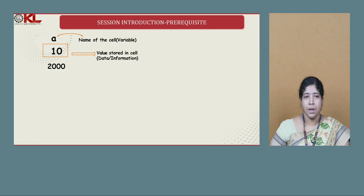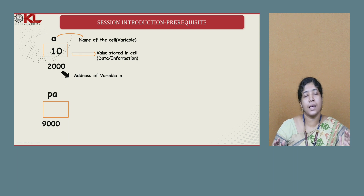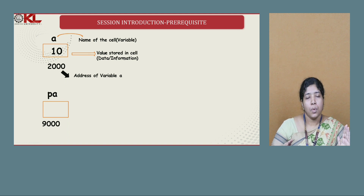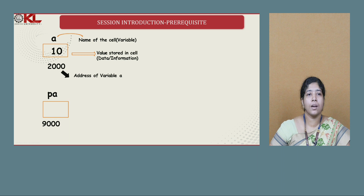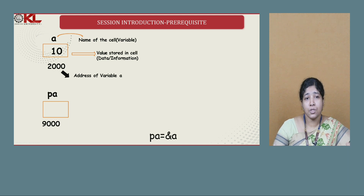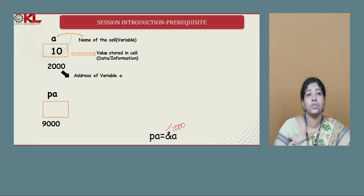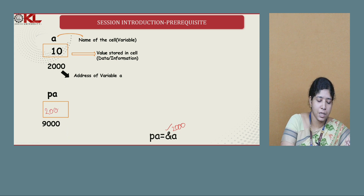To access this variable indirectly using the address, we create a pointer variable. For easy access, my suggestion is to create a pointer variable named PA — that is, P prefixed to the variable name A. So for the variable A, I create pointer variable PA. I have not stored any value into it yet; 9000 is just a random number used for this explanation. To store the address of A into PA, I write: PA = &A. So 2000 is the value being stored in PA, which is the address of A.